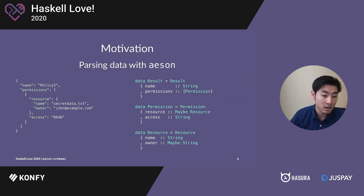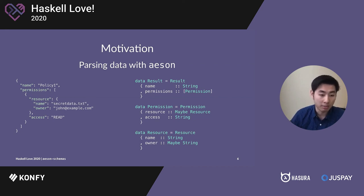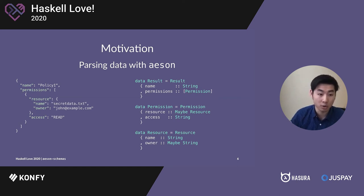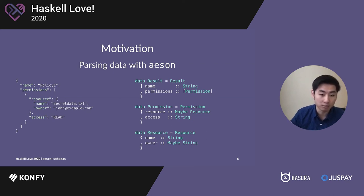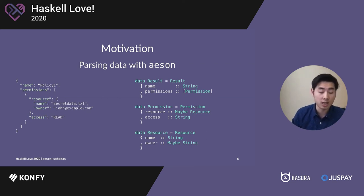Another thing to point out is that result and resource both have a field called name. When you have the same name in a record, it becomes difficult to use that field at the call site. The canonical solution in Haskell is to prefix the fields like result name or resource name. But that would mean you wouldn't be able to automatically derive from JSON — you would have to implement it manually, because when you derive from JSON with generic, the record names need to match the JSON key names exactly. And even if you manually derive from JSON, you still need all three of these data types, so it's still not a perfect solution.